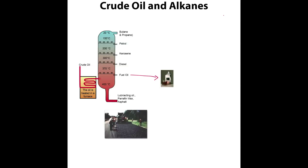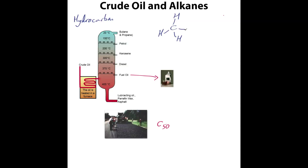Before I move on, let me explain what an alkane is. If we're thinking about how many carbons are in this molecule — the fuel oil has about 50 carbons roughly. An alkane is defined as a hydrocarbon, meaning it's a molecule made out of carbon and hydrogen — it's a hydrocarbon.